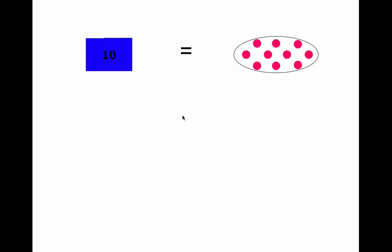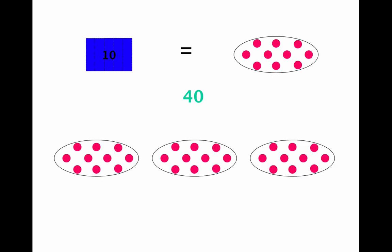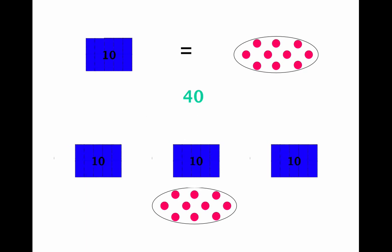So if we want to show the number 40, we can draw 40 dots, or we can use the shortcut and simply draw four 10 boxes. Now count by tens and we have 10, 20, 30, 40.